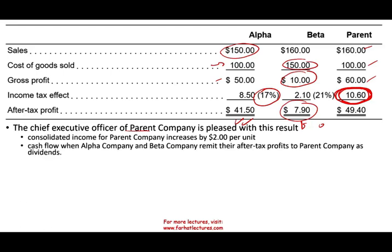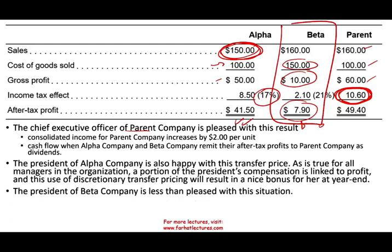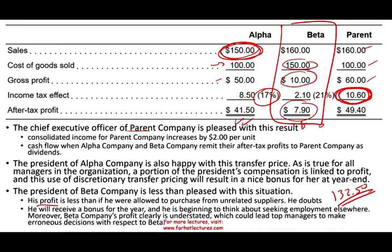The chief officer of the parent company is pleased because there are two extra dollars of profit. Cash flow and dividends will be higher when Alpha and Beta remit their after-tax profits. The president of Alpha is happy because they're now selling at $150 rather than $130, increasing their compensation and bonuses. However, Beta will not be happy — their profit is less because they're paying $150 when they could buy elsewhere at $132.50, resulting in lower bonuses and managers considering leaving.